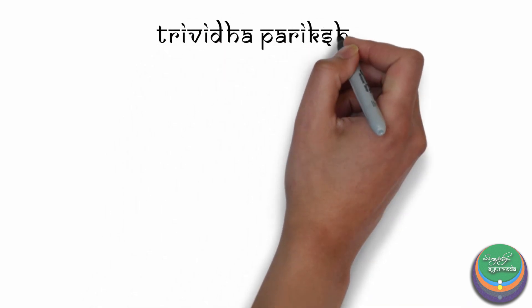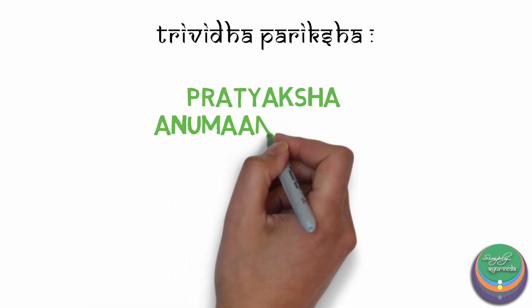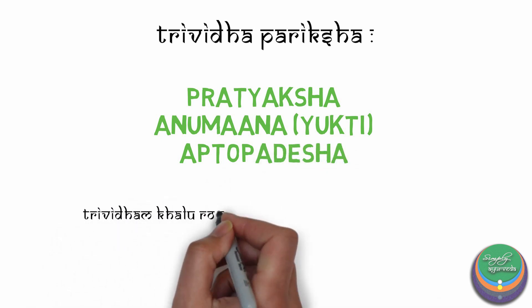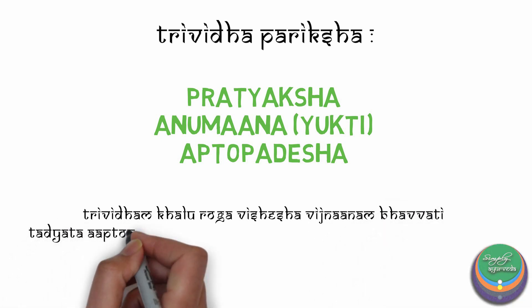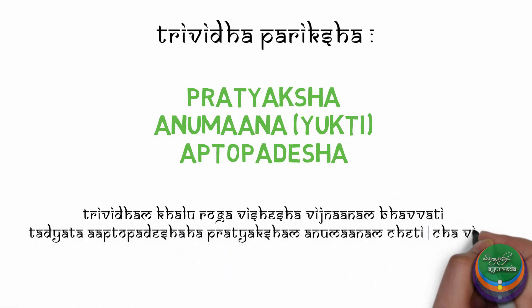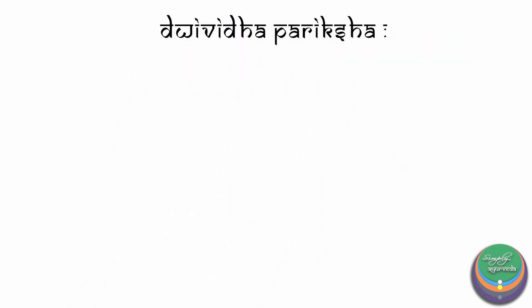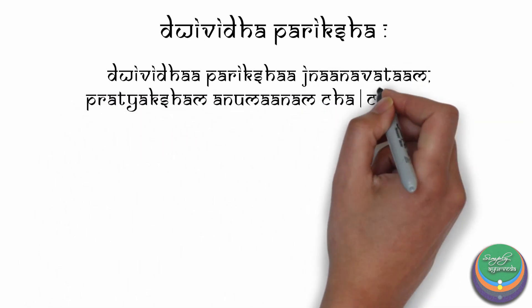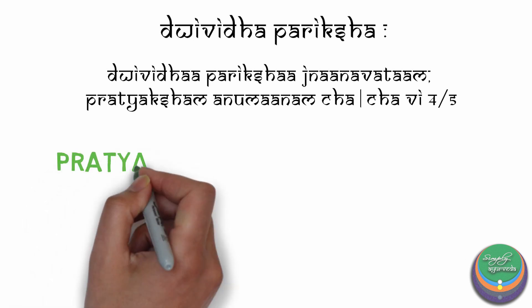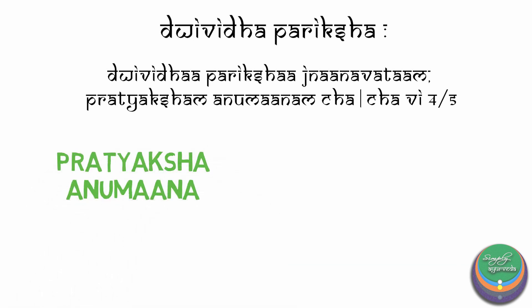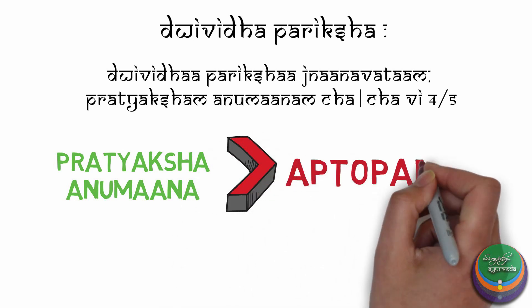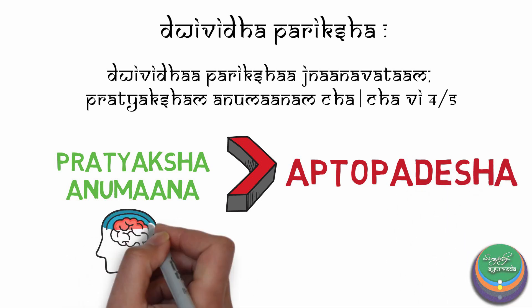Acharya Charaka has also mentioned Trividha Pariksha in Vimanastana after including Yukti under Anumana Pramana in the context of Rogapariksha. Acharya Charaka has indicated the superiority and importance of Aptopadesha and tells that without Aptopadesha, Pratyaksha and Anumana become obsolete. Hence, for a person who is Jnanavan or Aaptha, only two Pramanas are needed.